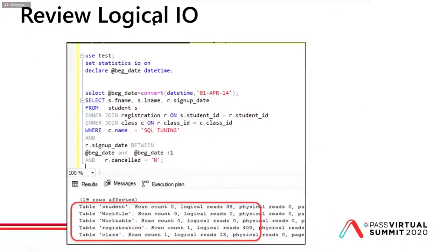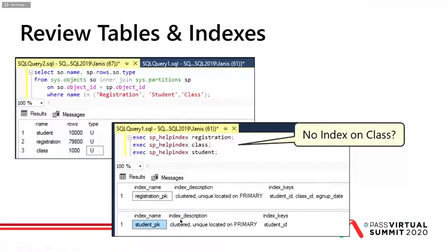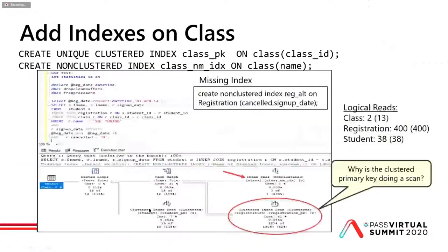When we ran the query, I set STATISTICS IO on — logical reads were around 400, but notice it put data into a work table/work file, so it did some extra steps that aren't right. I reviewed the tables and indexes: Registration is my top detail table at 79,800 rows; Class is only 1,000; Student is 10,000. Looking at the indexes, I have no index on Class — in fact it's a heap.